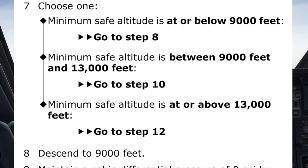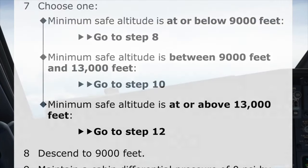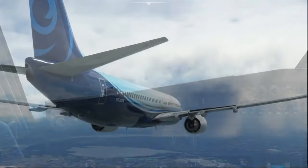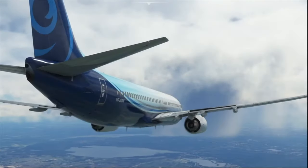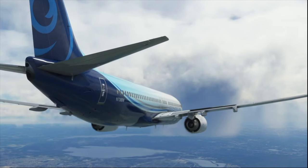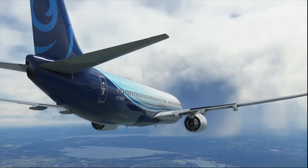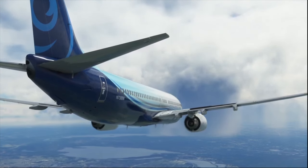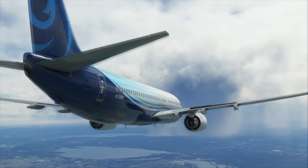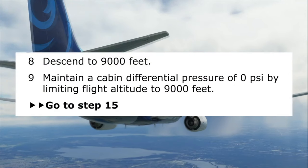We are directed to go to step eight, which states to descend to 9,000 feet. Step nine has us maintain a cabin differential pressure of zero PSI by limiting flight altitude to 9,000 feet. We then are directed to step 15.